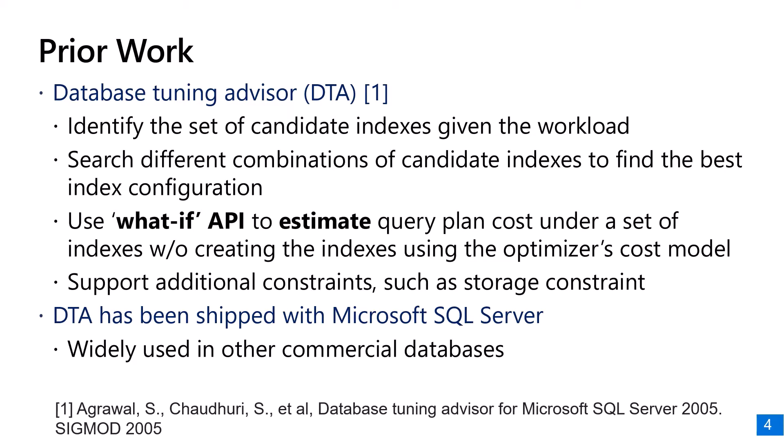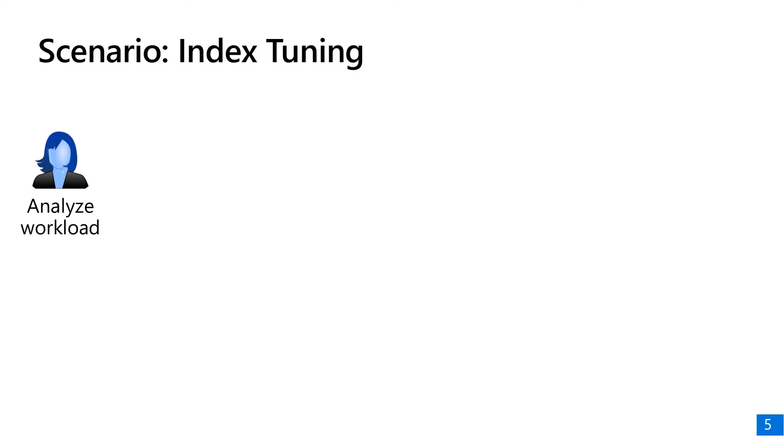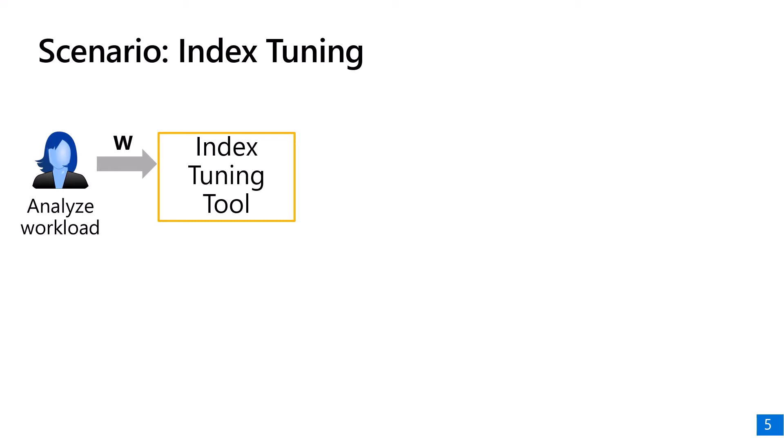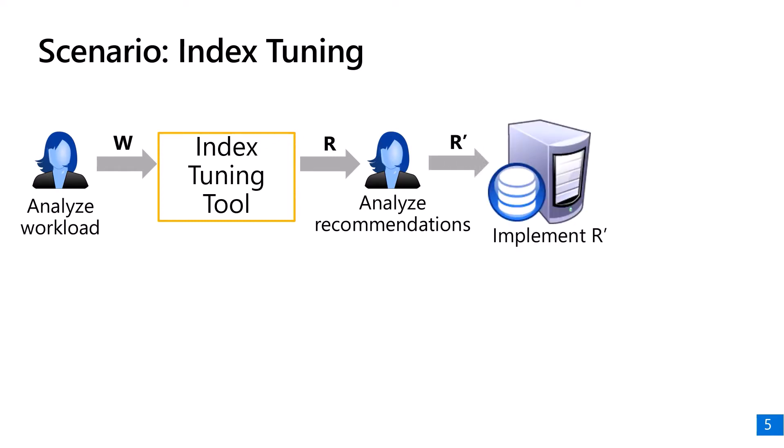Let's look at how an index tuning tool like DTA is used in practice. It often starts with a database administrator (DBA) who analyzes the workload and uses it as input to the index tuning tool. After getting the index recommendation, the DBA analyzes the recommendations, implements the indices in the database, observes how it performs, and troubleshoots any performance issues.